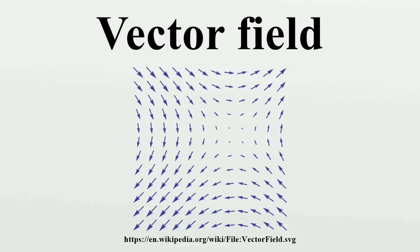Gradient field: Vector fields can be constructed out of scalar fields using the gradient operator. A vector field V defined on a set S is called a gradient field or a conservative field if there exists a real valued function F on S such that V = ∇F. The associated flow is called the gradient flow, and is used in the method of gradient descent.